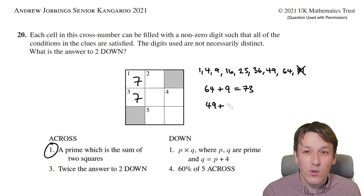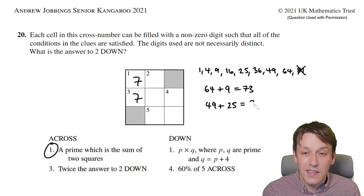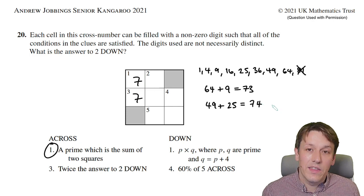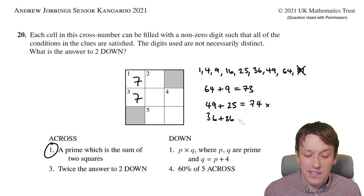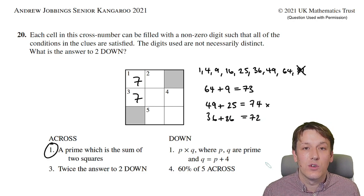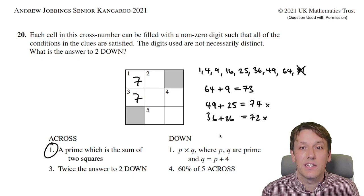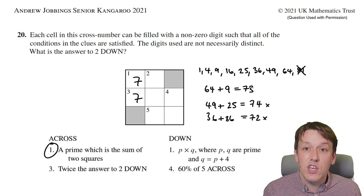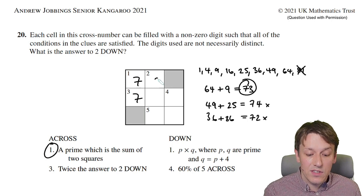I could also try 49, and the only one that brings me into the 70s would be 25, which gives 74—not a prime because it's even. Then we could consider 36 plus 36, which is 72, also not prime. I didn't say it had to be the sum of two different squares. But we're making progress because the only prime here is 73, so one across must be 73.